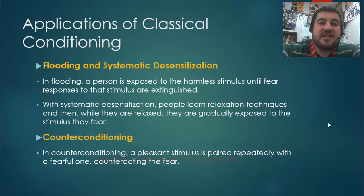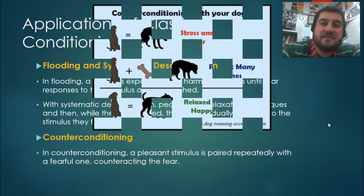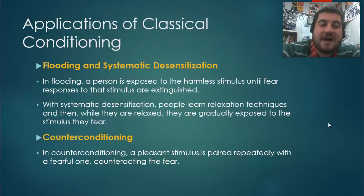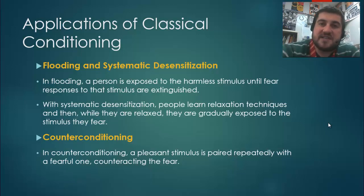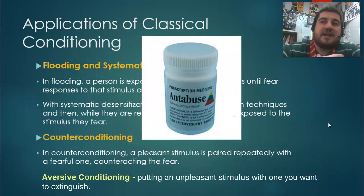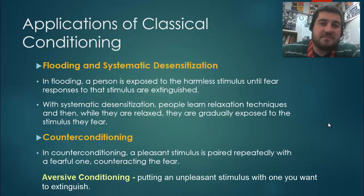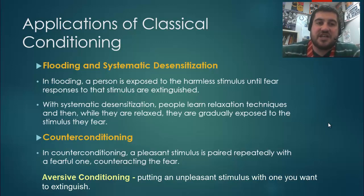In counter conditioning, a pleasant stimulus is paired repeatedly with a fearful one, counteracting the fear. There's also the opposite: pairing an unpleasant stimulus with a pleasurable one — for example, with alcohol, there's a drug you can take so that if you consume alcohol it will make you throw up, thereby pairing vomiting with drinking alcohol and extinguishing the pleasurable association. That is all we have for classical conditioning — I know it was a lot today, but it's a very important concept in psychology.